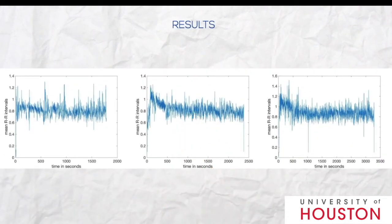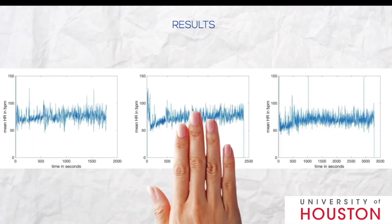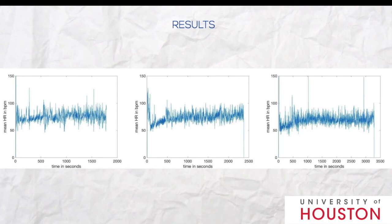When we run our algorithm on a subject, we plot the mean RR intervals over time in seconds. We found that the mean RR interval in the neutral condition is lower than in the interrupt and time pressure conditions, meaning heart rate is higher in the neutral condition than in the other two.